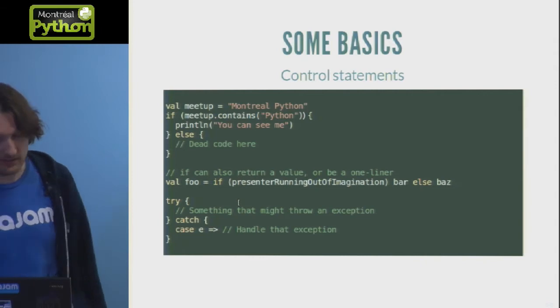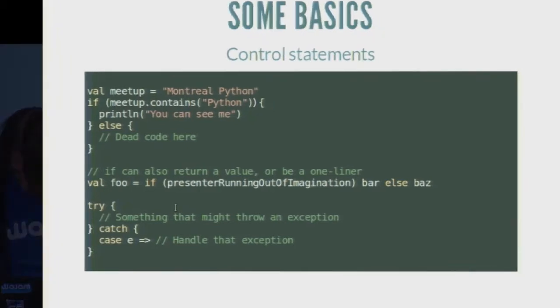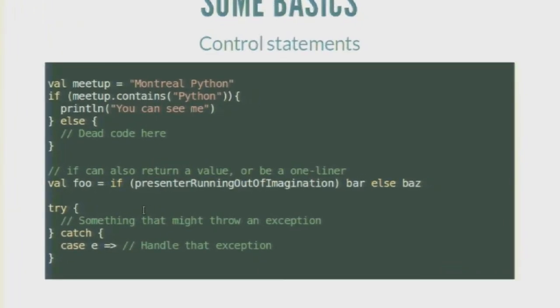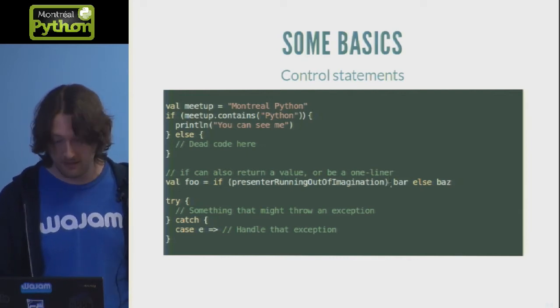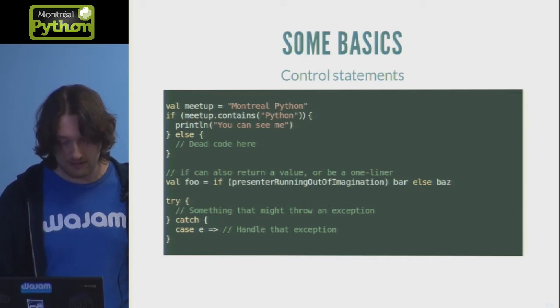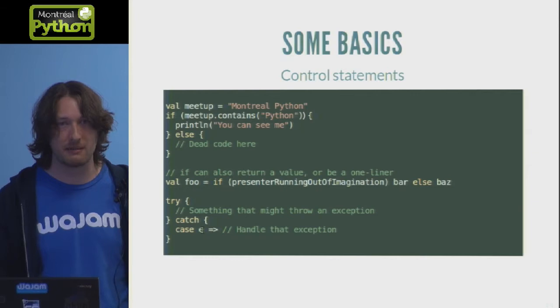Moving on to basic control statements — you've got an if condition, which basically looks like what you'd write in Java, but you can write it as a one-liner and even return a value from it, basically like a ternary operator in C-style languages. Brackets are optional here. You've also got a try-catch block, where a case with E is just used to match any kind of exceptions.